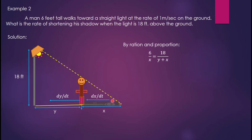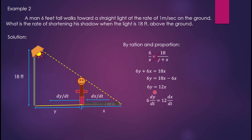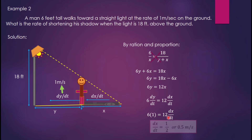Using ratio and proportion: 6 over x equals 18 over (y plus x). Cross multiplying: 6y plus 6x equals 18x, so 6y equals 12x. Differentiating: 6 dy over dt equals 12 dx over dt. Since dy over dt equals 1 meter per second, substituting: 6 times 1 equals 12 dx over dt, giving dx over dt equals 0.5 meters per second. That is the final answer.